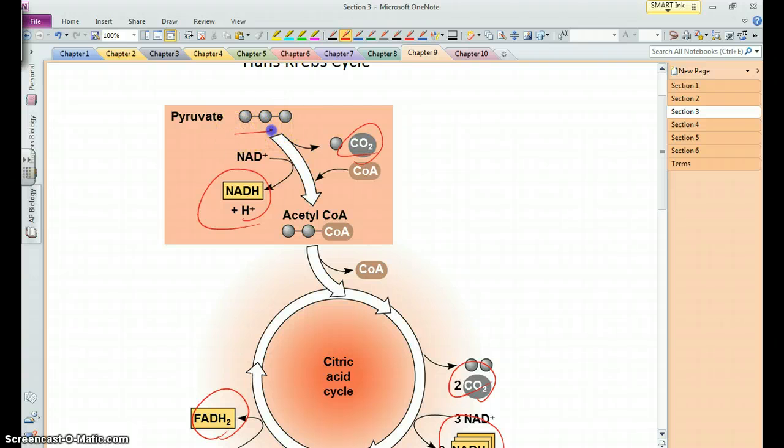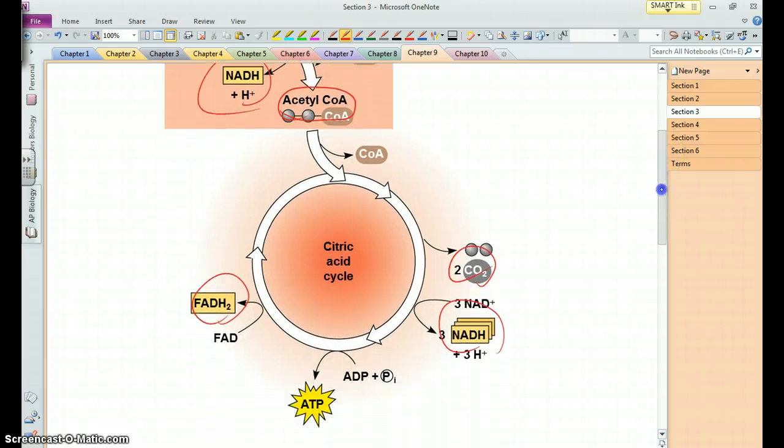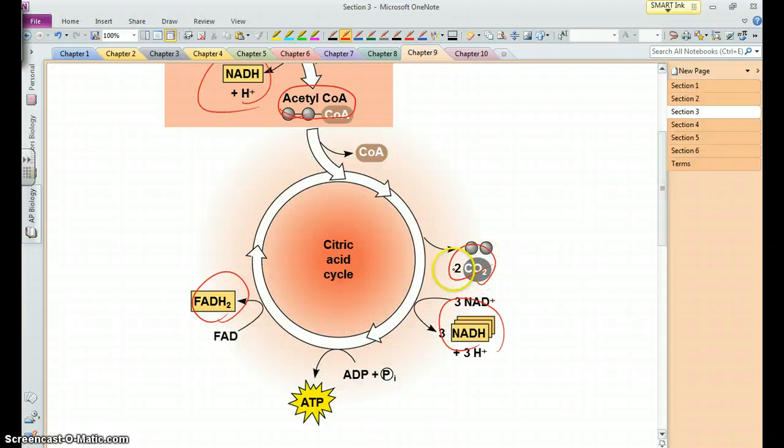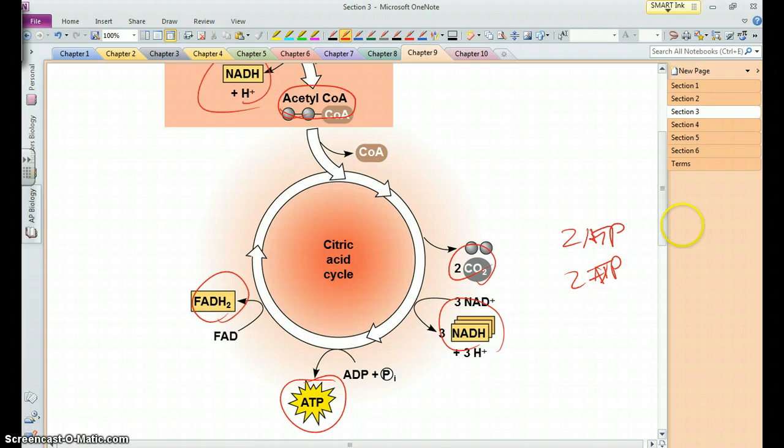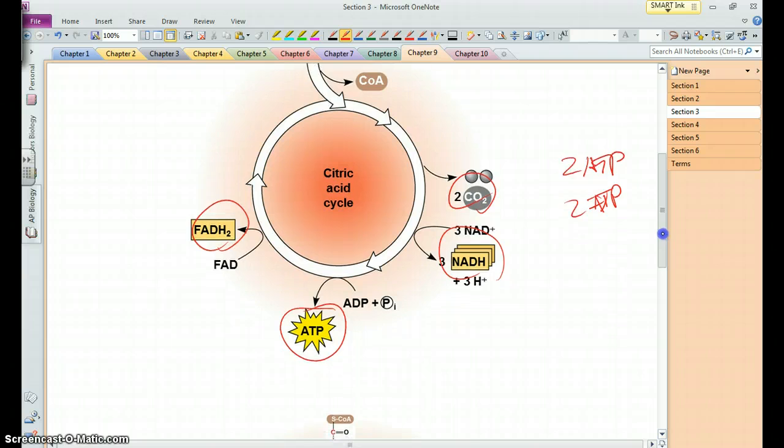There's this little initial step here converting pyruvate into this compound called acetyl-CoA, or acetyl-Coenzyme A, which enters the Krebs cycle, where again we generate the rest of the CO2s and all these electron carriers. And for each pyruvate, we're going to generate an ATP. So far from our single glucose, we've generated 2 ATPs in glycolysis and 2 more in the citric acid cycle. So we've gained 4 so far.